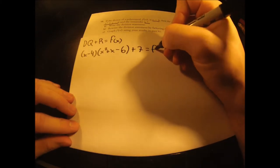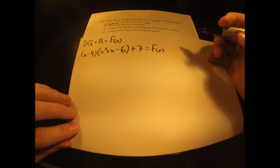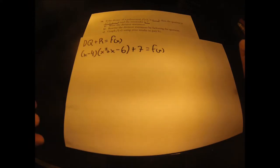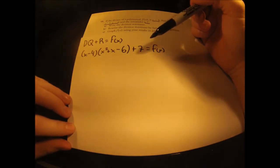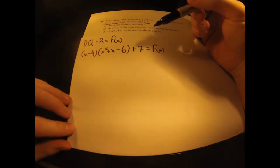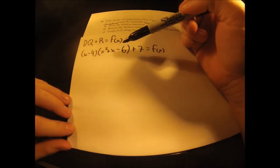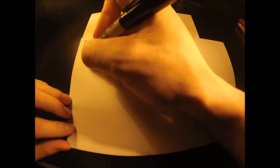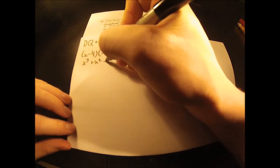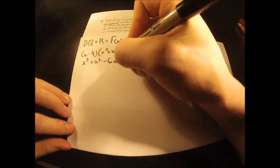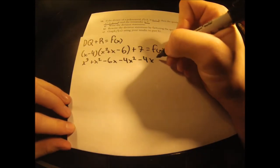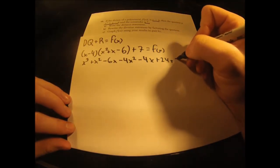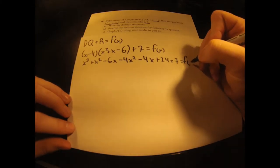Now we've got to solve for f(x) to give us our full solution. We're going to do that by expanding and simplifying this equation. So let's start by using the distributive property to get rid of these brackets, and that will leave us with x cubed plus x squared minus 6x minus 4x squared minus 4x plus 24 plus 7, all equal to f(x).